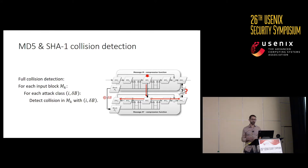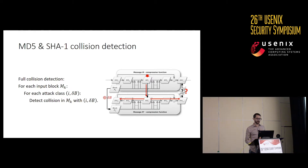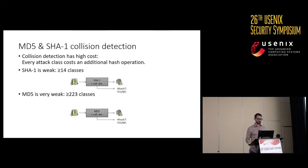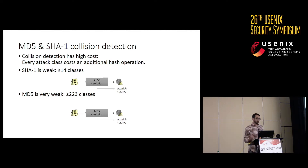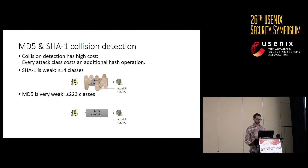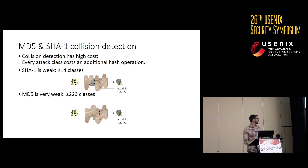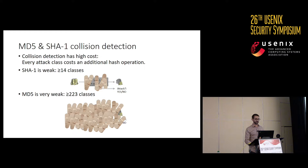The whole collision detection algorithm iterates over all the attack classes for each block in the message and uses this collision detection routine. This has a high cost — every attack class costs an additional hash operation. SHA-1 is weak and has at least 14 classes of attacks it is susceptible to. MD5 is very weak and has at least 223 classes, so it requires quite a bit of fixing.